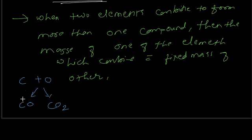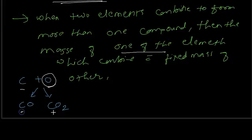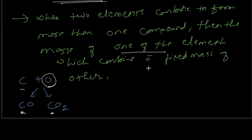Carbon and oxygen combine to form either carbon monoxide or carbon dioxide. One of the elements — in this case oxygen — combines with a fixed mass of the other element, which is carbon, because carbon has the fixed mass and oxygen's mass is changing.